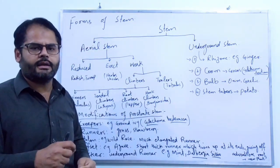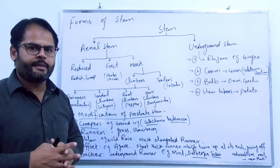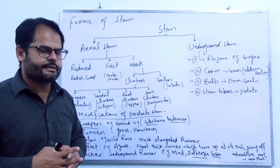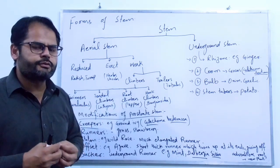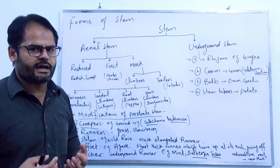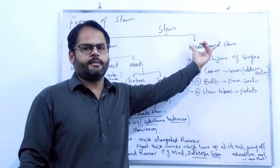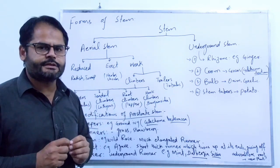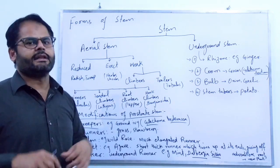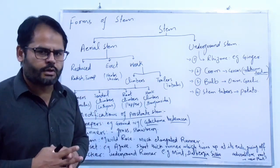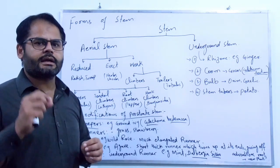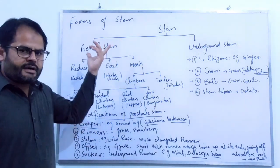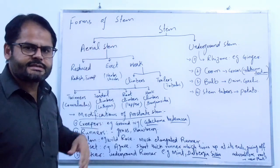The underground stem is that kind of stem which is beneath the soil. It develops, increases in thickness, and stores food in the form of starch. In underground stems there are parenchymatous cells which help to store food in the form of starch, which is a complex carbohydrate.